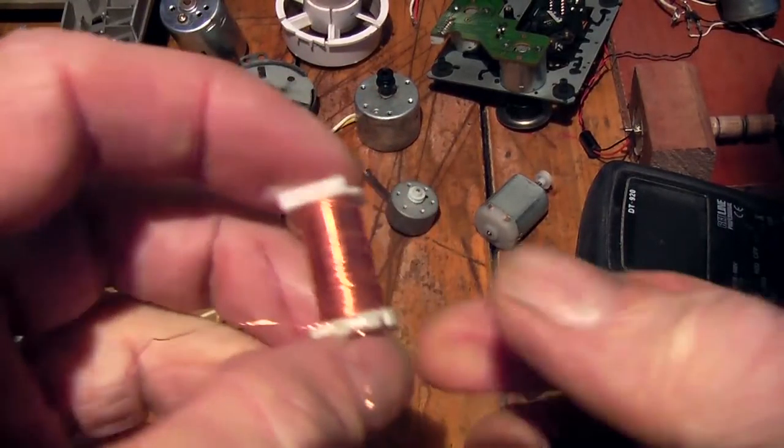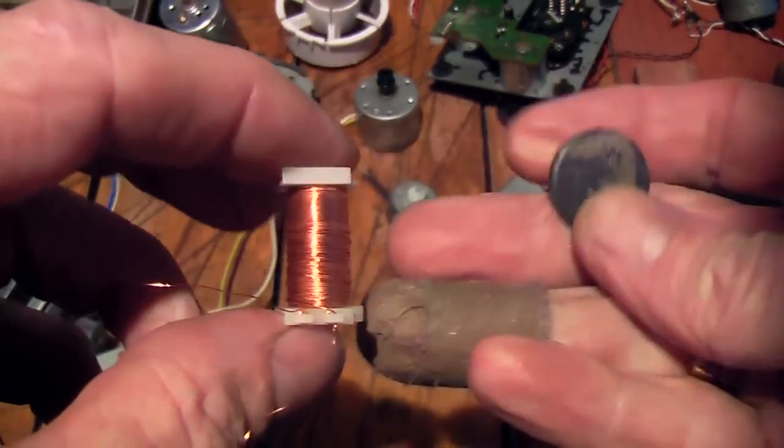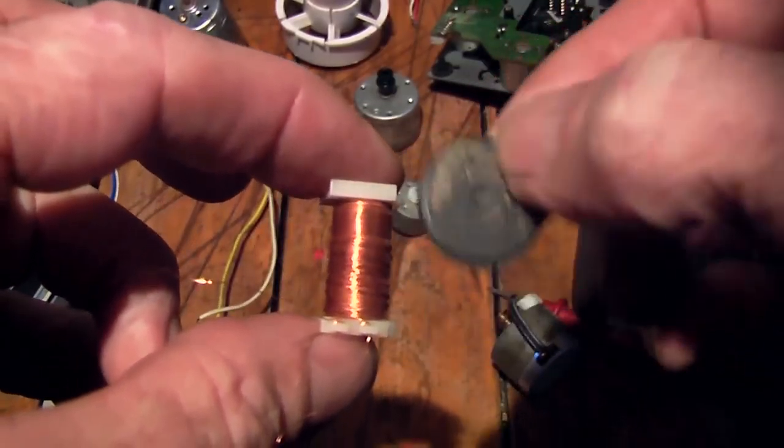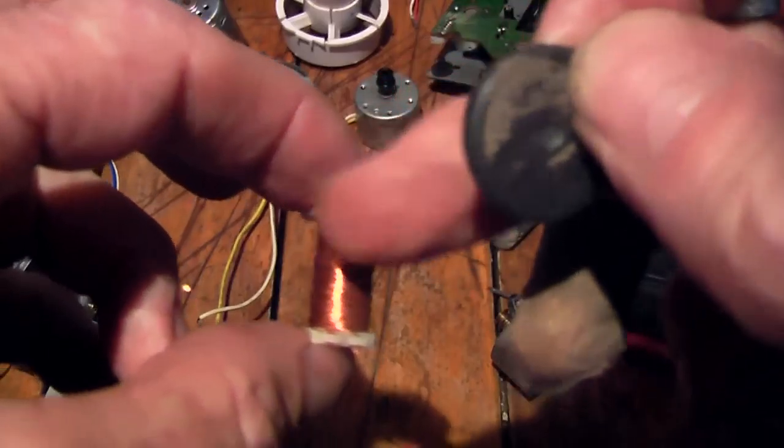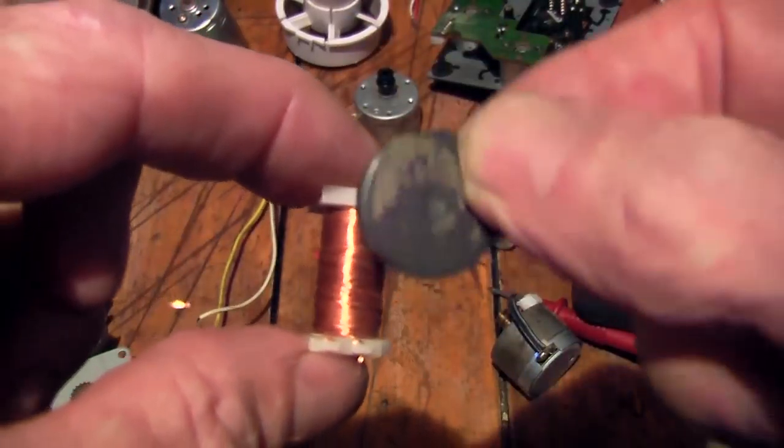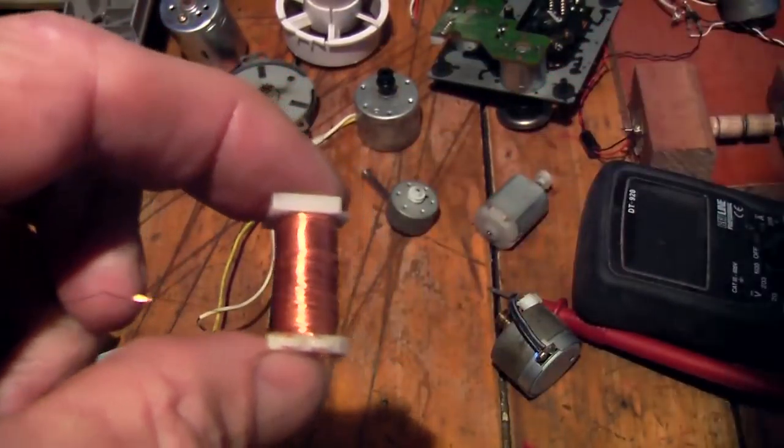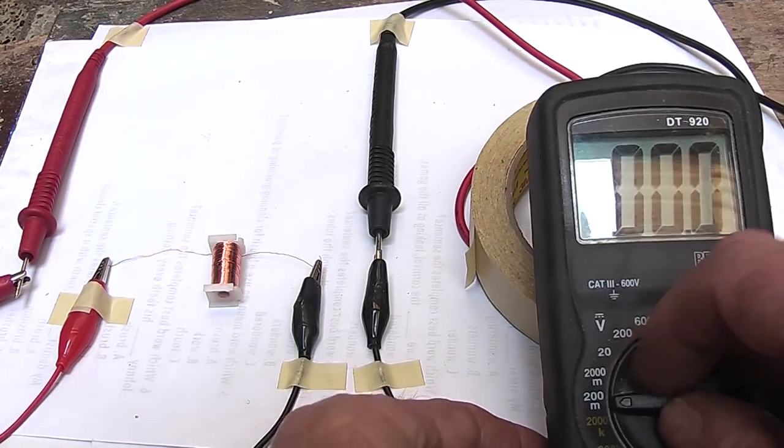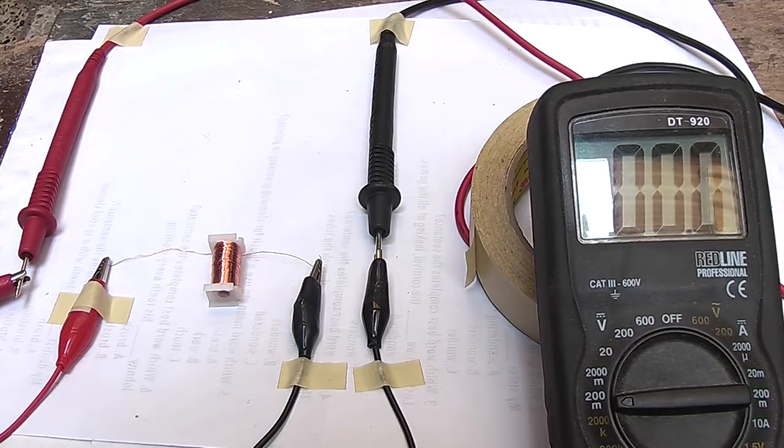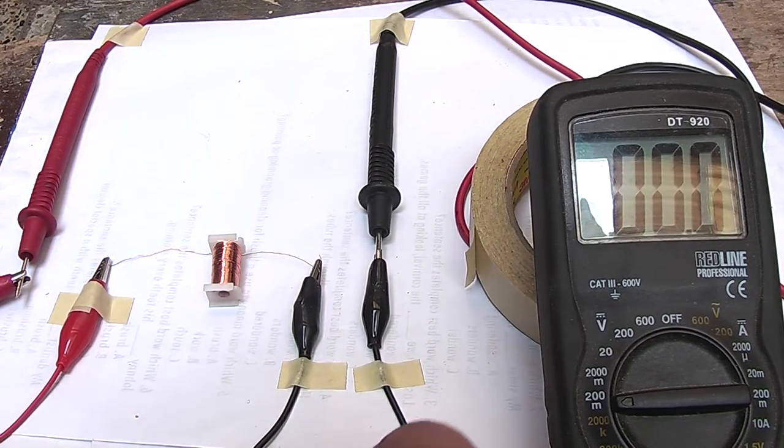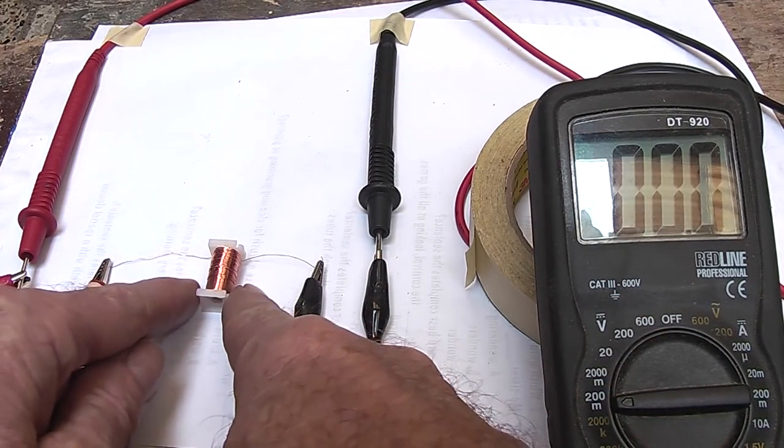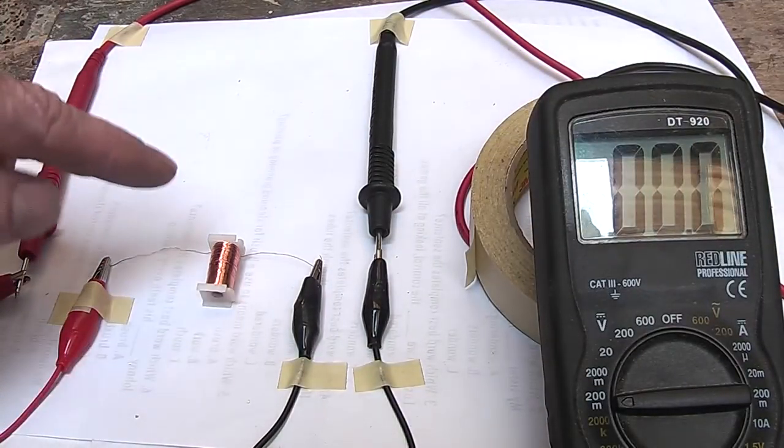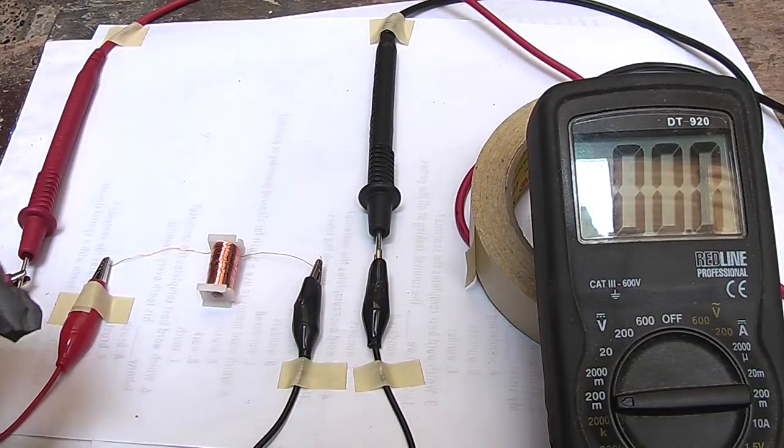That means if you take a coil like this and get a magnet and go like that, it is actually generating minute amounts of electricity in that coil and in the wire. So let's test this using a voltmeter here. I've got it on millivolts, 200 millivolts scale. I've got the coil linked up just by wires.